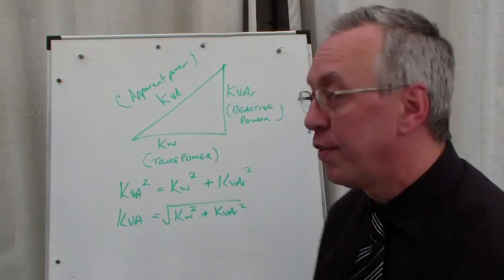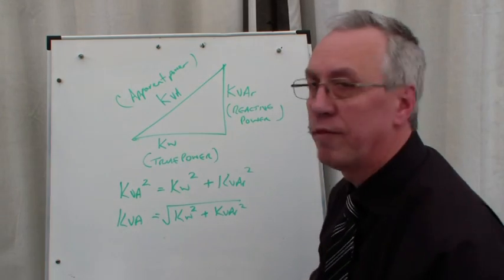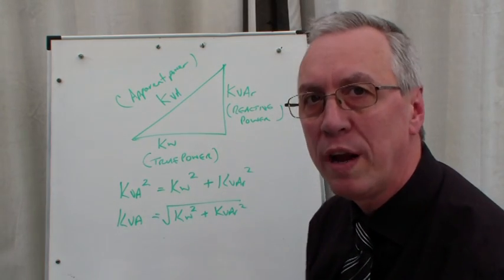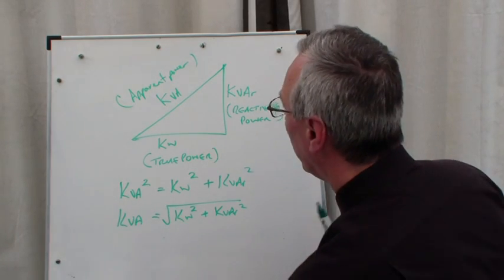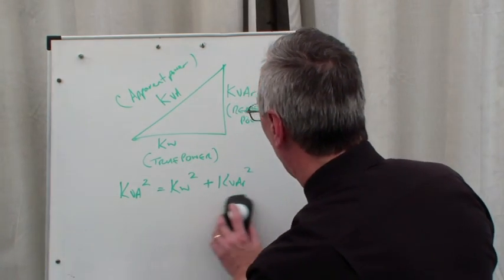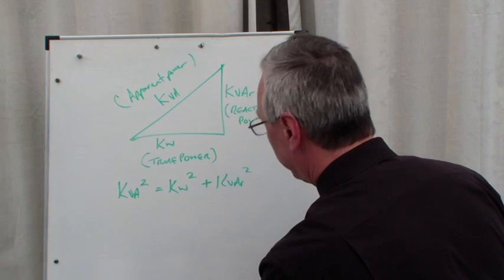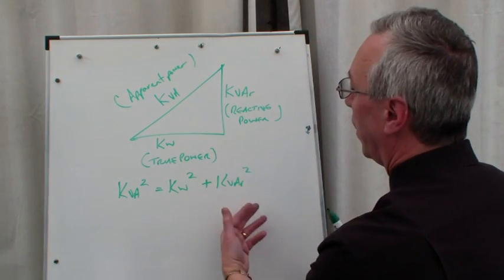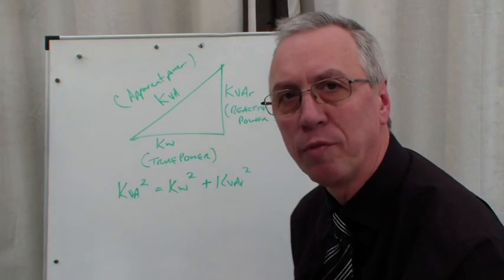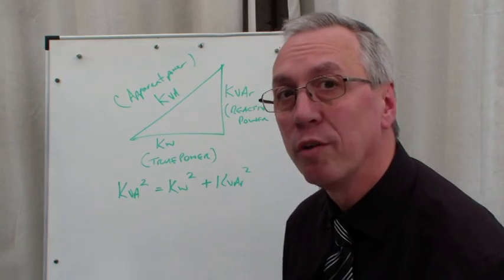A lot of the time we might just need to find this value or that value, so we will need to rearrange the formula. If we always start off with what we know, a² + b² = c², if we always write that down before we start, we probably wouldn't ever go wrong.